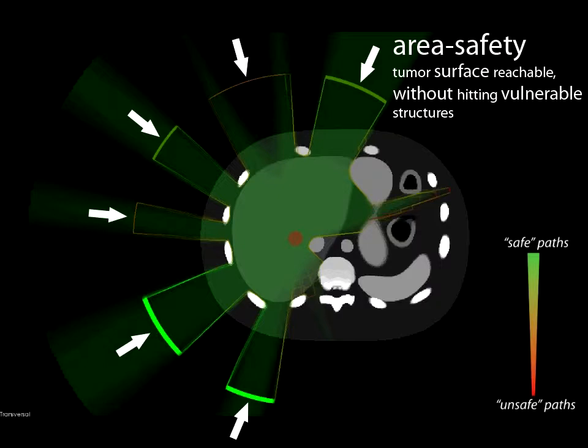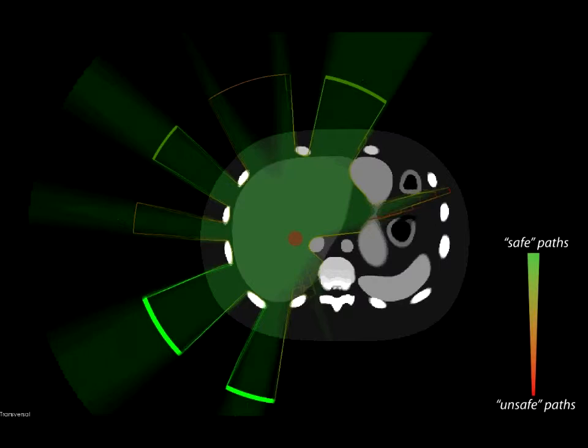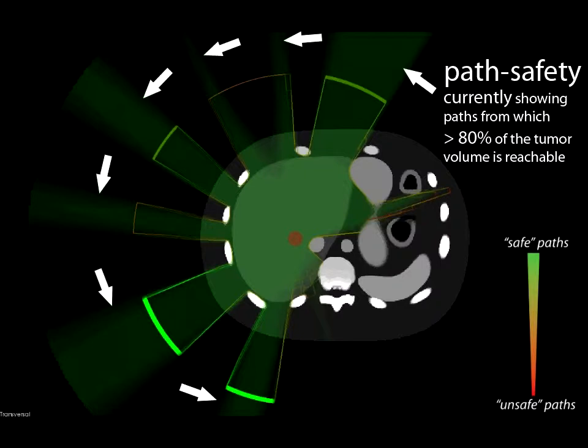This geometric information is derived from the path safety volumes. We show also the computed path safety volumes in 2D. In this scene, we show only paths which reach at least 80% of the segmented tumor areas.